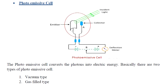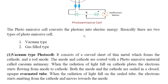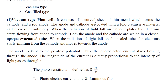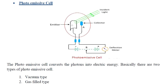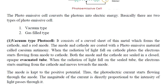In the photoemissive cell, we have a cathode and an anode. Light energy falls on the cathode. The anode collects the emitted electrons and the circuit is closed. The vacuum-type photocell consists of a curved sheet of thin metal which forms the cathode and a rod anode. The anode and cathode are coated with a photoemissive material called cesium-antimony.